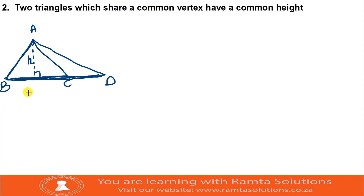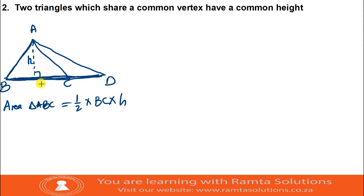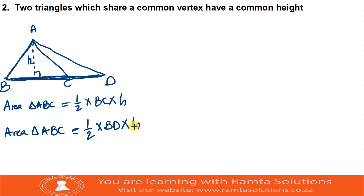For triangle ABC, I want to show you this: the area of triangle ABC is half times base BC times height h. Now for triangle ABD, can you see that? Its area is half times base BD times height h. So remember, two triangles which share a common vertex have a common height.